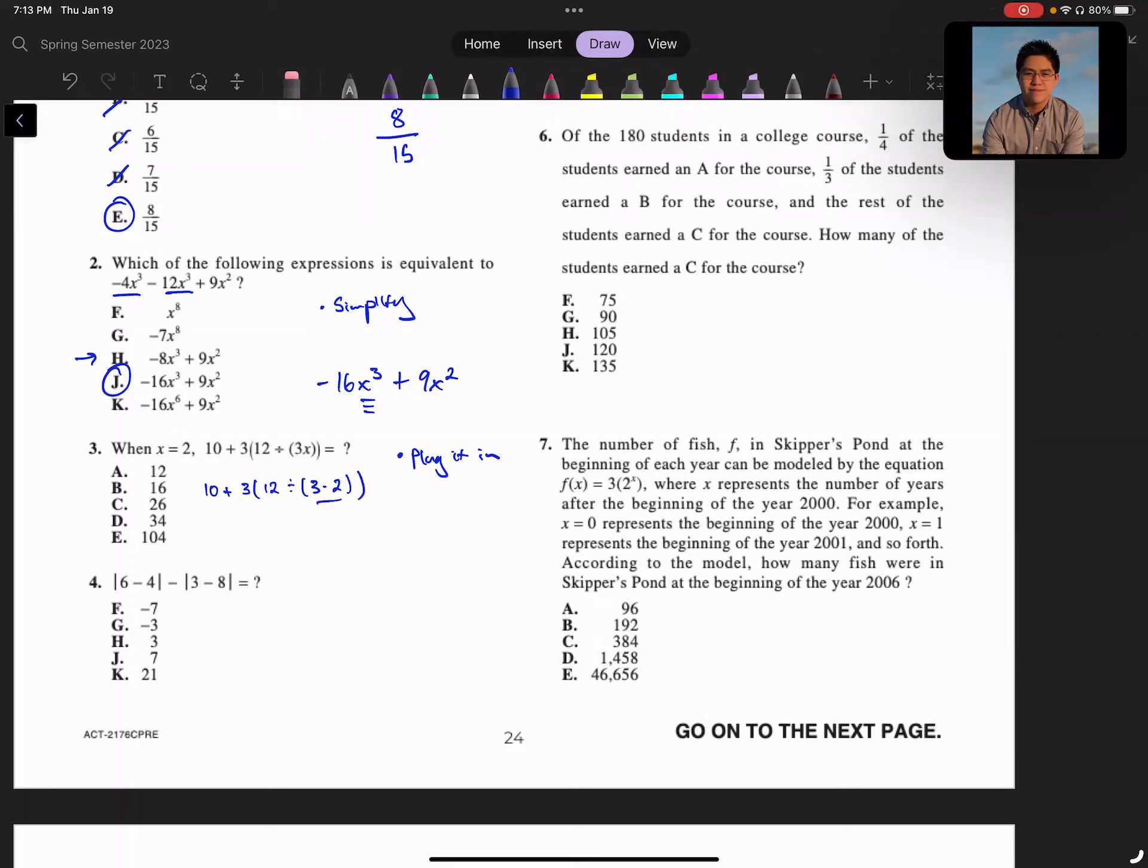So plug it in, I would get 10 + 3(12 ÷ (3 × 2)). Remember, parentheses inside, most inside first. So I get 10 + 3 × 12 ÷ 6. Then 10 + 3 × 2, which equals 10 + 6, which equals 16.